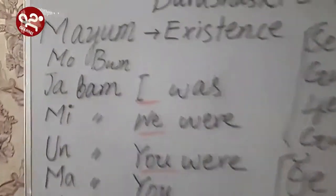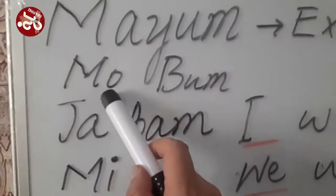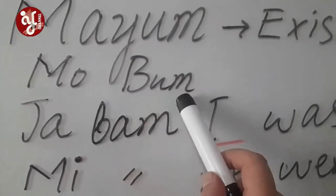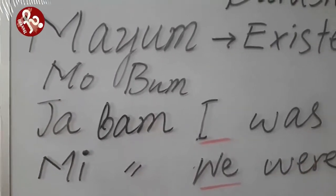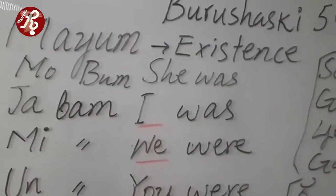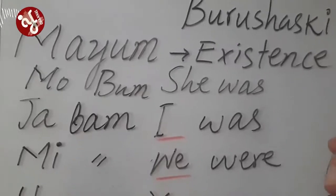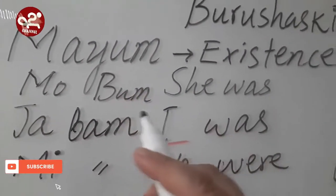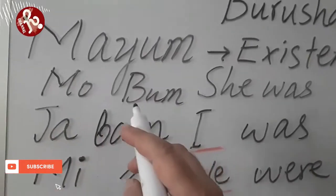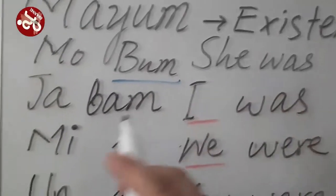Let's go to the first column for living beings. Here we have 'Mo' — Mo means 'she' — Boom: 'she was'. Mo Boom means 'she was'. So the existence and the gender: the existence of gender is shown by the word Mayum, or the existence. Mo Boom — Boom is for female — means 'she was'.